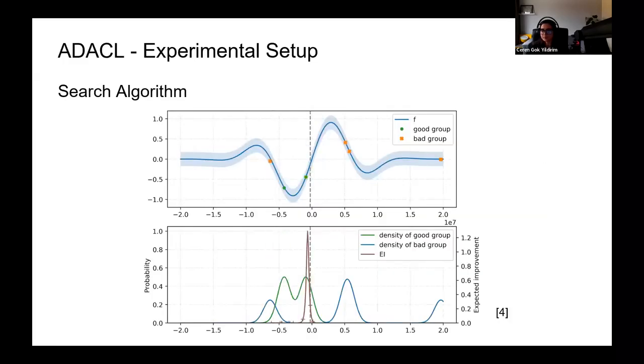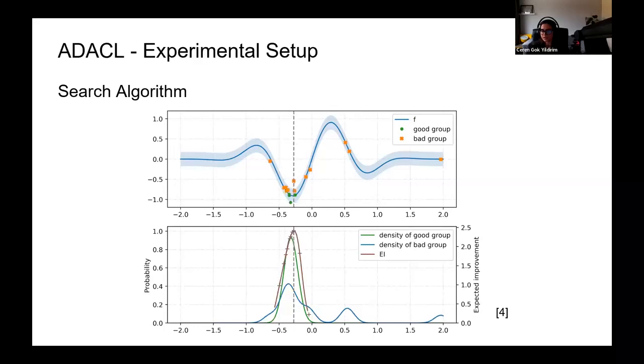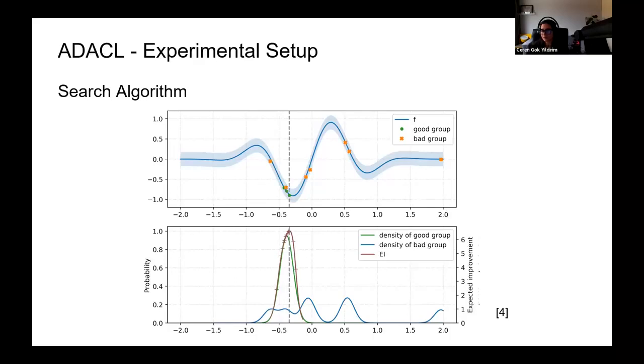To find the best hyperparameters, we employ a powerful search algorithm, known as tree Parzen estimators. TPE, a method rooted in Bayesian optimization, is an important part of our hyperparameter optimization process. In our study, TPE serves as a search algorithm. It navigates within specified ranges for crucial hyperparameters such as learning rate, regularization strength, and memory size per task. This exploration is aimed at finding the best values for those hyperparameters.